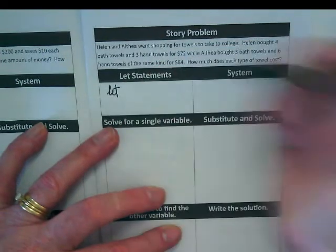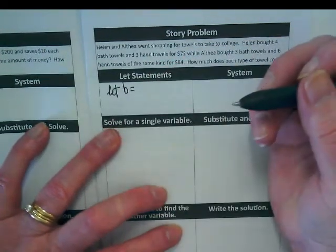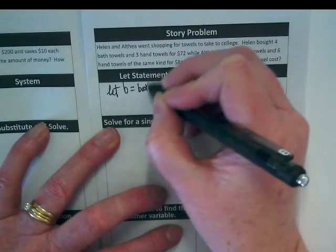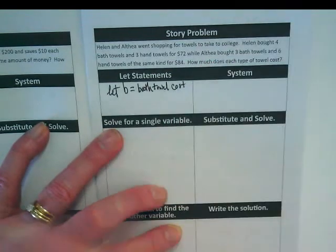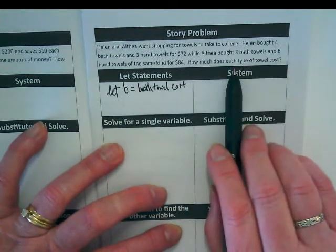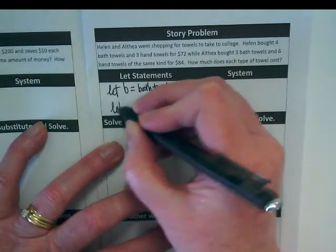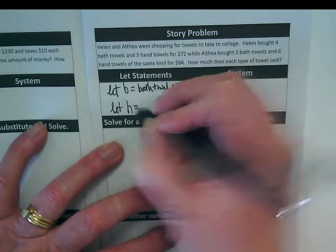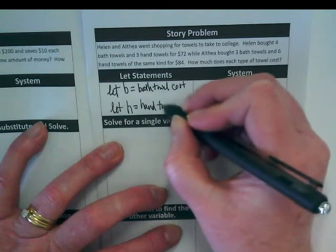So as we set this up, we're gonna make our let statements. Let B, it doesn't equal bath towels. It equals bath towel cost. What's the question we're being asked? How much does each type cost? So then we're gonna do let H equal hand towel cost.